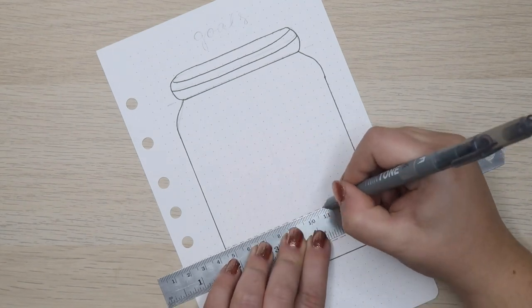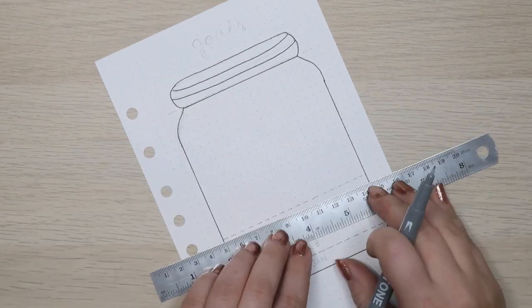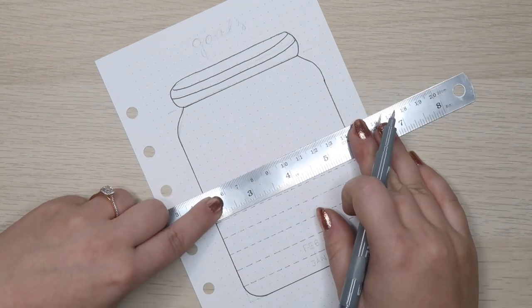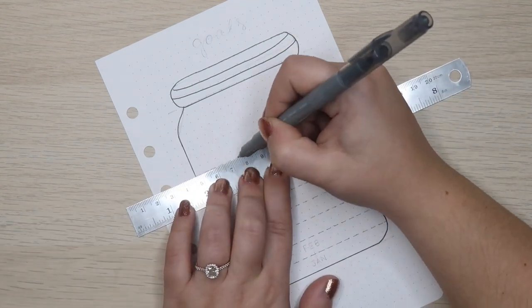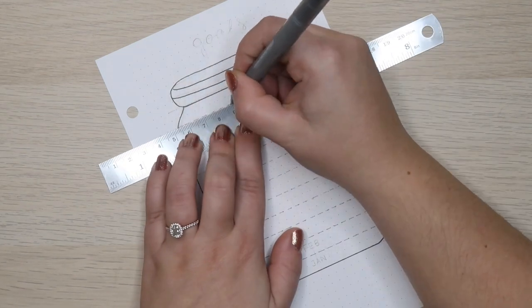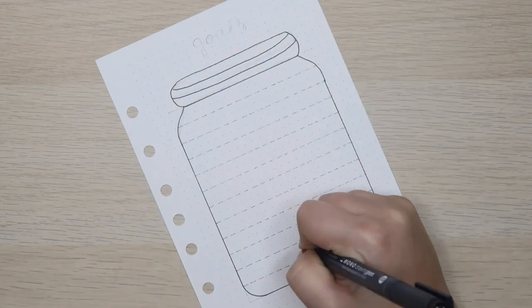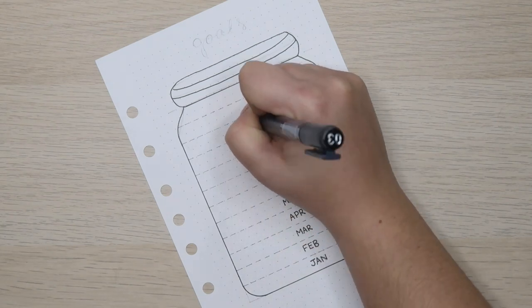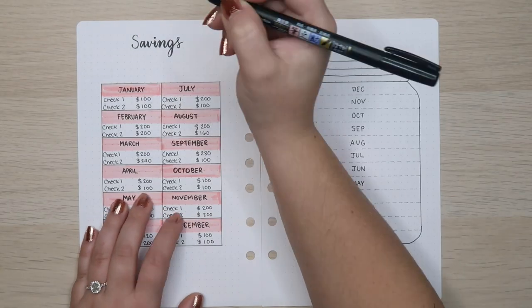And some years, when I'm able to, I like to double it so that I can save $4,000. And every time I make this spread, I like to represent it as a little savings jar so that every time I get a paycheck and I put a little in my savings, I can color in a line on my jar and slowly watch it fill up throughout the year.